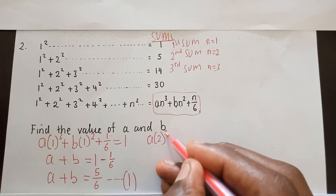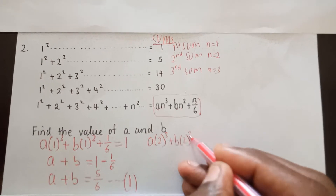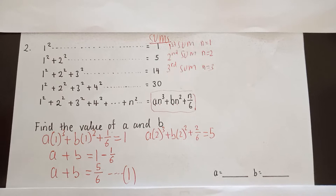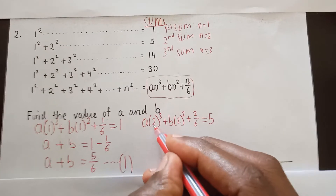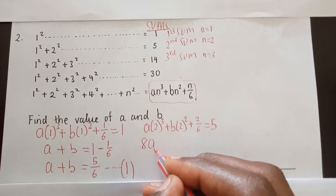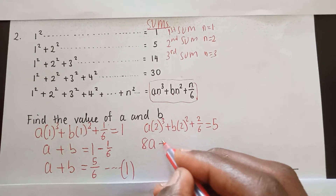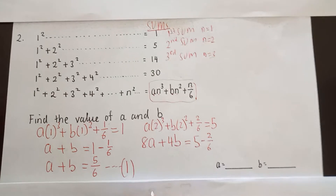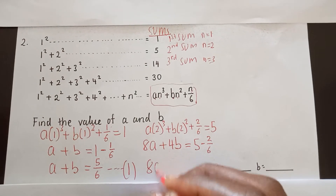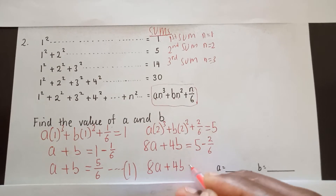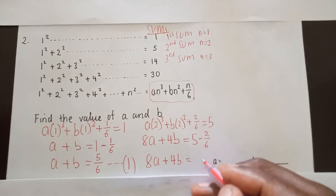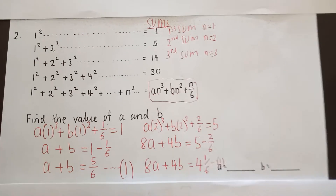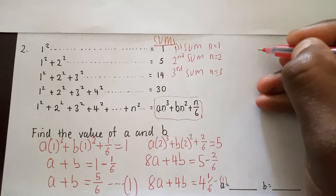Then for n equals two: a times two cubed plus b times two squared plus two over six should give me the second sum, which is five. Two cubed gives eight, so 8a; two squared gives four, so 4b. This equals five minus two over six. When I simplify, I get 8a plus 4b equals 28 over six. This becomes my second equation.